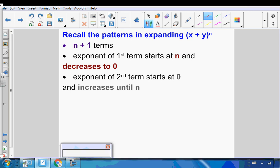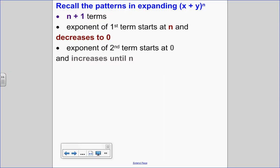From what we did in our last lesson, let's talk about the patterns in expanding. There's always one more number of terms. The exponent of the first term starts at n and goes down to zero, whereas the exponent of the second term starts at zero and builds up to n.